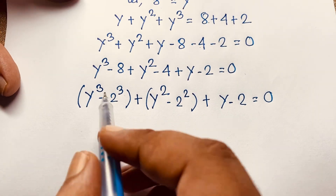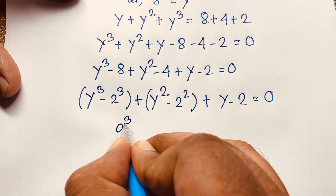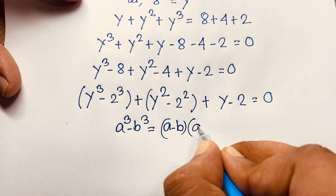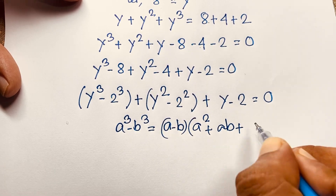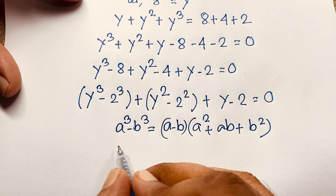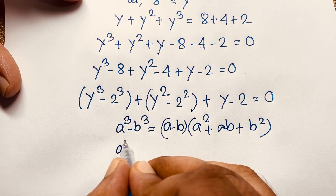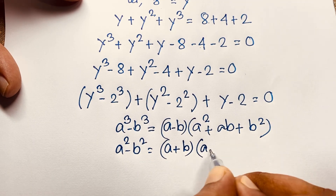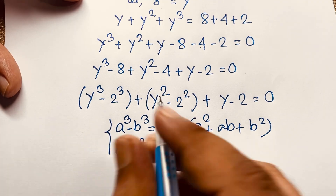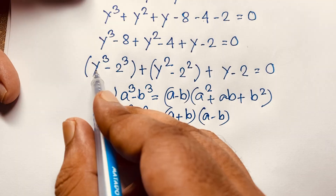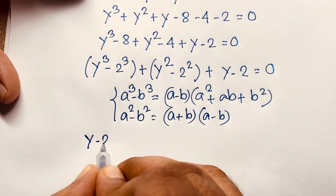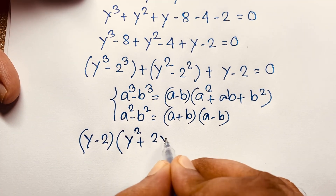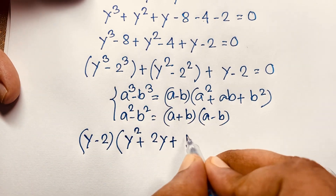Now we apply the factoring formulas. The difference of cubes: a³ - b³ = (a - b)(a² + ab + b²). The difference of squares: a² - b² = (a + b)(a - b). Applying both: (y³ - 2³) factors as (y - 2)(y² + 2y + 4), and (y² - 2²) factors as (y + 2)(y - 2).